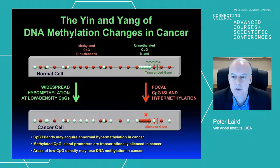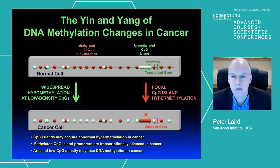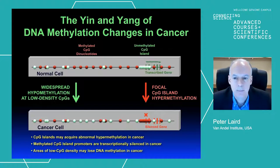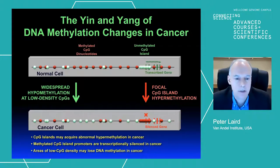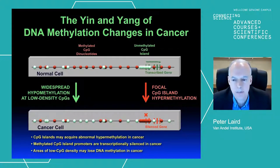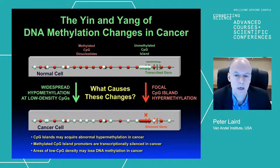If we focus on the two changes that have been known for many decades: there's a widespread loss of methylation at low-density CpGs throughout the genome, initially thought to be mostly represented by repetitive elements, but really restricted to certain genome regions. On the other hand, CpG islands—more dense regions of normally unmethylated CpGs—can acquire abnormal DNA methylation, leading to transcriptional silencing of the gene associated with that CpG island at its promoter. Today I'll focus on what the underlying basis is for these changes.